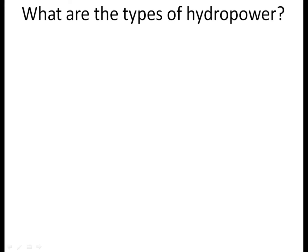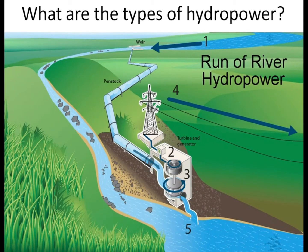In this video, I'll explain how to answer the question: What are the types of hydropower? 1. Run-of-river hydropower. Run-of-the-river power plants may either have no storage at all, or a limited amount of storage. This type of power plant converts energy of the flow of water into electricity.